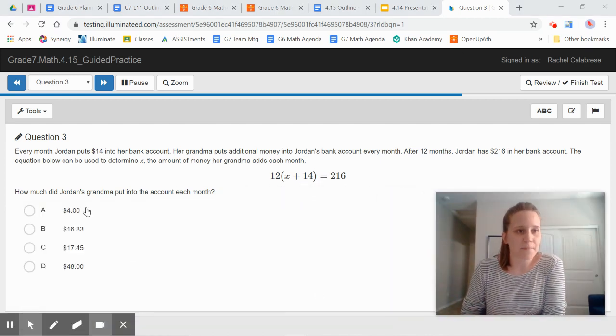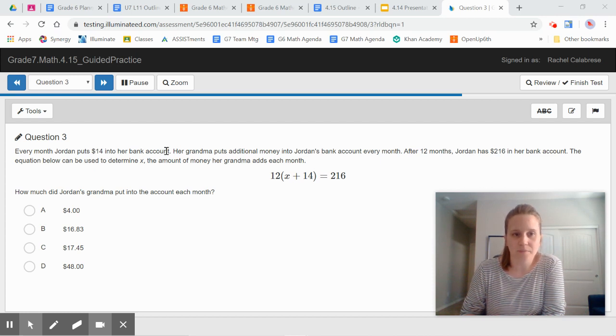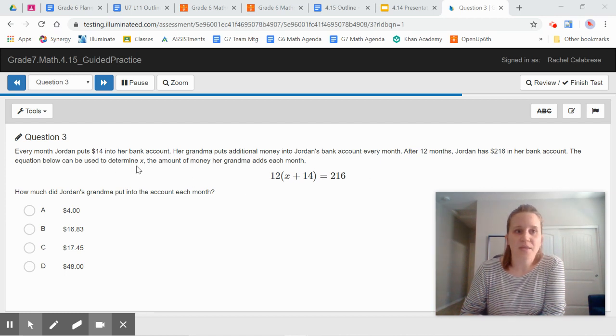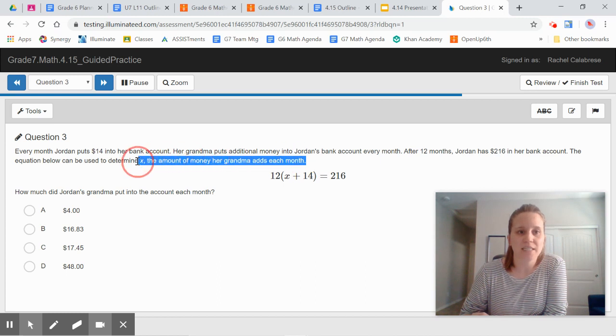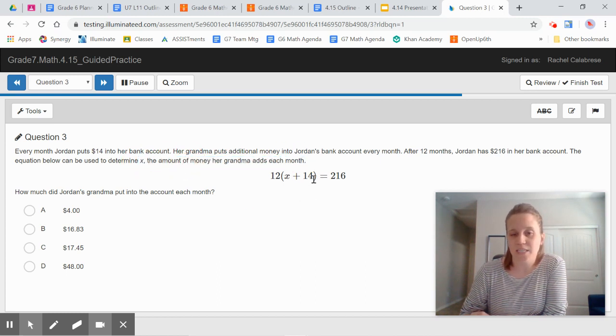Question 3 says, every month Jordan puts $14 into her bank account. I see 14 in this equation here. Her grandma puts additional money into Jordan's bank account every month. It does not tell us how much. I'm guessing that X represents the amount of money that grandma puts in. After 12 months, Jordan has $216 in her bank account. The equation below can be used to determine X, the amount of money her grandma adds each month. Yep. So X does represent the amount of money grandma puts in the bank account. Jordan puts $14 herself. Why is that being multiplied by 12? It's being multiplied by 12 because we are counting after 12 months. She has $216 in the bank account. The question is, how much did Jordan's grandma put into the account each month? That's what X represents. So this question is asking us to solve for X. Go ahead and copy down this equation onto your notes and begin solving for X. I'm going to put a minute on the timer. Go ahead and get started.